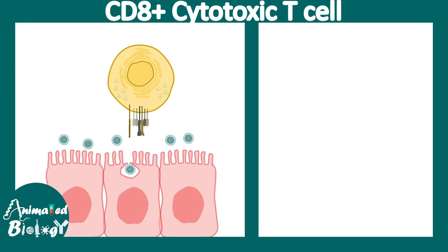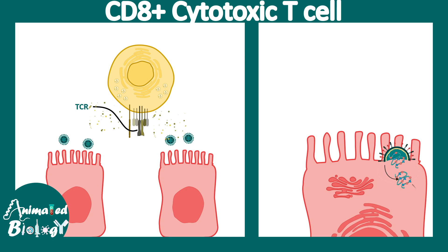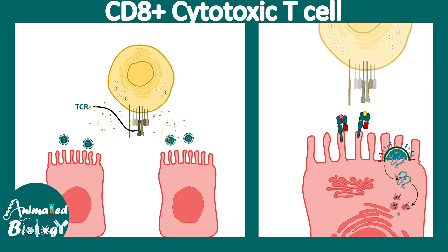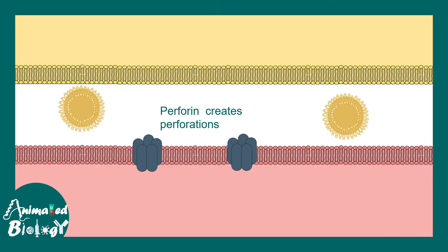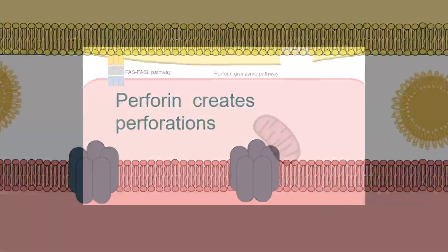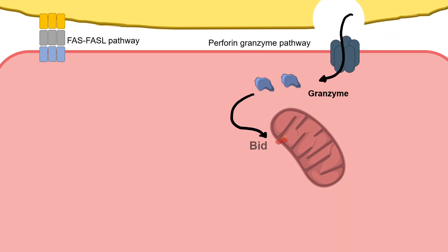Cytotoxic T cells recognize virus-related peptides presented on class 1 MHC and kill that cell with the help of perforin and granzyme. Some virus peptides get presented on class 1 MHC, which these cells recognize, and in response to that, they secrete perforin and granzymes.